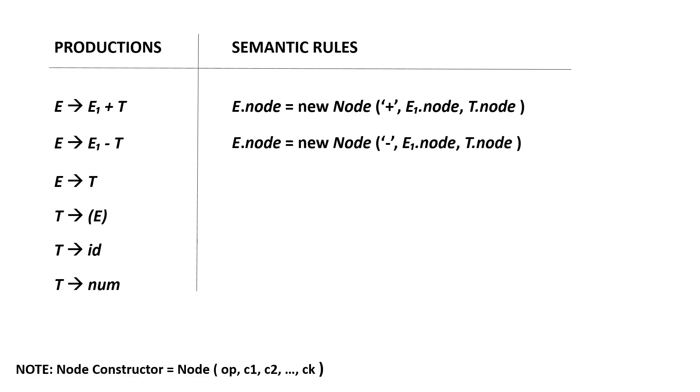The same thing will be applied to the second production. In the third one, e derives t will be just e dot node equals t dot node. The same with the fourth production. In the fifth production, we will be using the leaf constructor, which equals leaf, open parenthesis, operator, then value, close parenthesis.